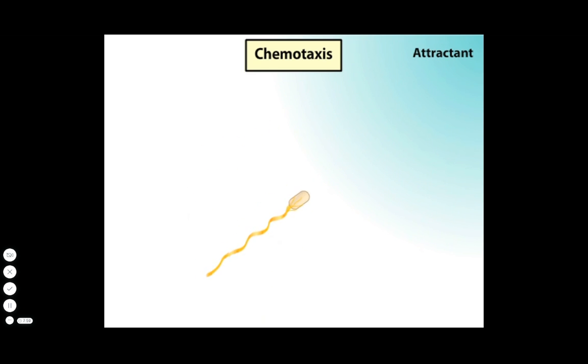As the concentration of an attractant increases, the cell generates fewer signals to switch flagellar rotation, and the cell tumbles less often.